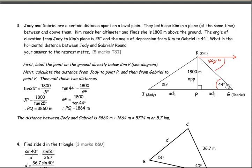We have two right triangles. The 1800 m side is opposite to 25° in one and opposite to 44° in the other. Using tan in the left triangle: tan 25 = 1800 / JP, so JP = 1800 / tan 25 ≈ 3860 m. In the right triangle: tan 44 = 1800 / GP, so GP = 1800 / tan 44 ≈ 1864 m. The total distance between Jody and Gabriel is 3860 + 1864 ≈ 5724 meters, or about 5.7 kilometers.